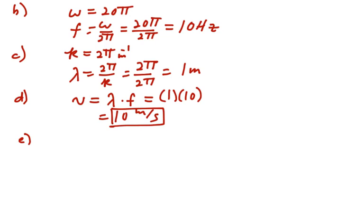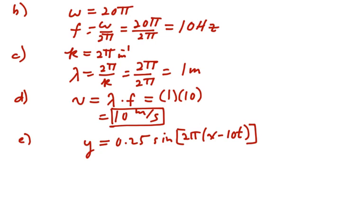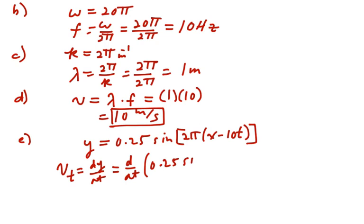To get the transverse velocity at x = 1.6 and t = 1.5, we have to think about this wave function. It describes a point that is transverse to the direction of the wave — a point in the medium perpendicular to the direction the wave is moving. The wave moves along the x-axis with time t. So to find how that point moves transversely, we need to take the derivative of position y with respect to time.